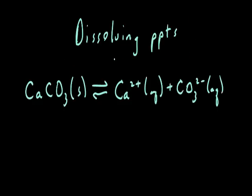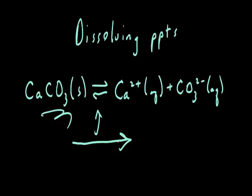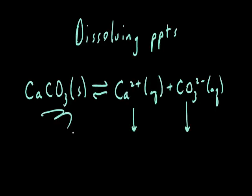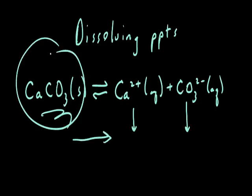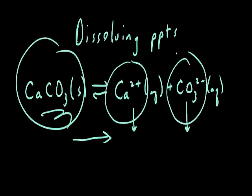If we have a saturated solution that has some solid present and we're in a state of equilibrium, to make the solid dissolve we want to drive the reaction to the right. To do that, we need to do something with the ions — in this case either carbonate or calcium ions. If we can make the calcium or carbonate ion concentrations decrease, that would cause the reaction to shift to the right, and we would see the amount of solid lessen and possibly disappear as the reaction continually shifts to the right in its attempts to replace the calcium or carbonate ions that have been taken away.